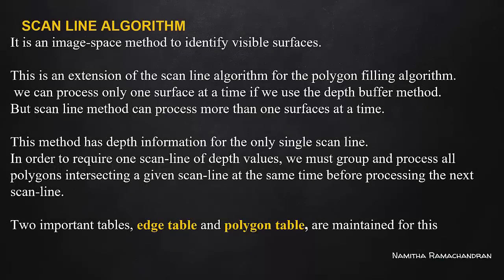If you compare it, you can also simplify it a lot. The execution time reducing algorithm is a scanline algorithm. This is an image space method for identifying visible surfaces — the depth buffer method is the image space method. This is the projected plane, used for visible and invisible portions. This is an extension of the scanline algorithm for polygon filling.